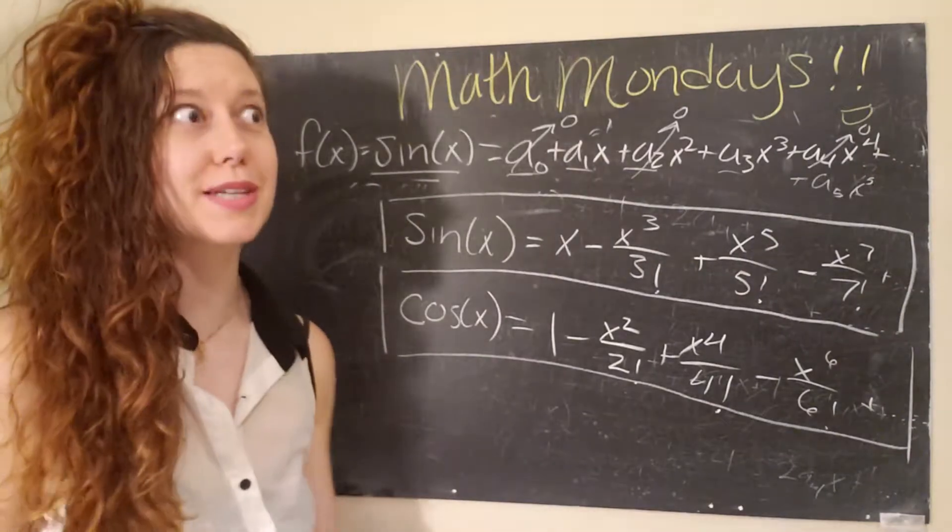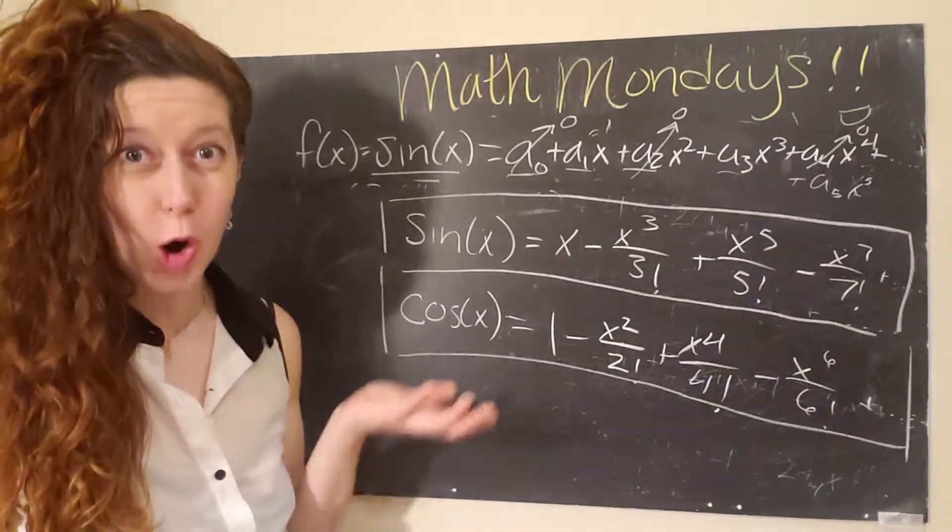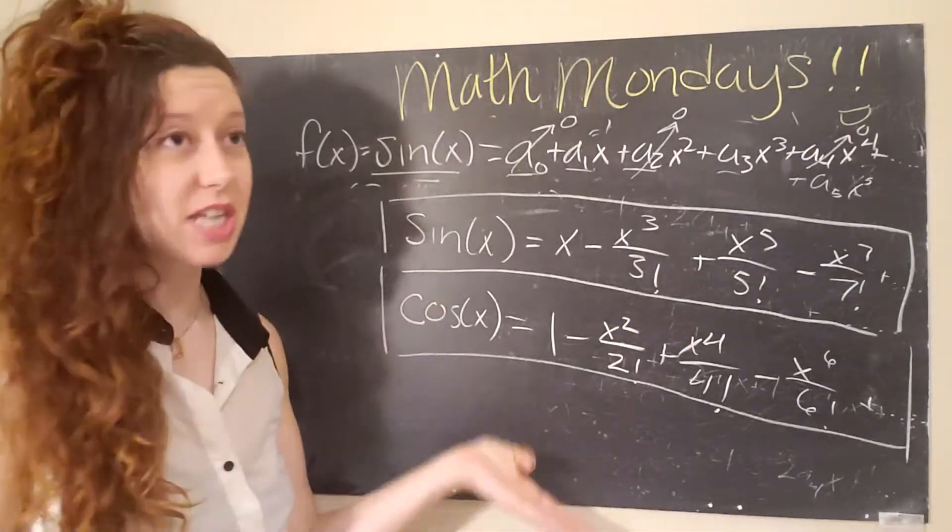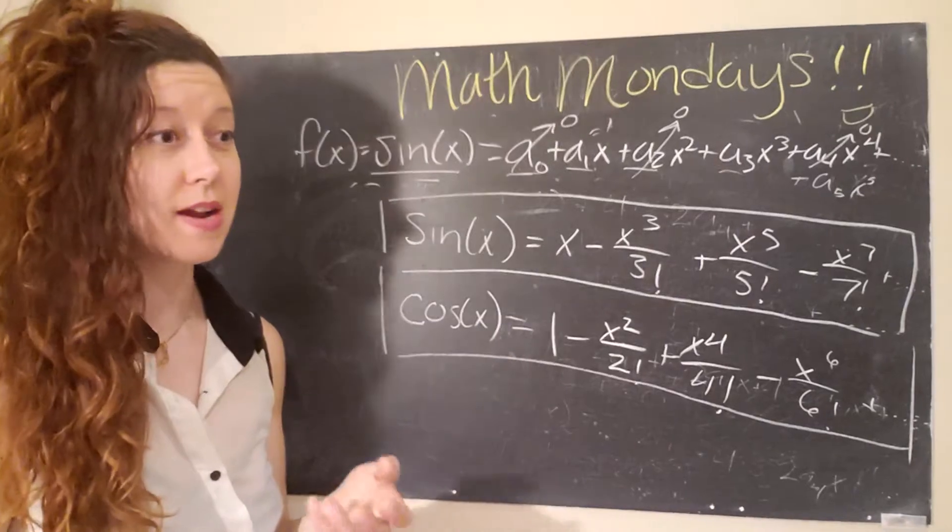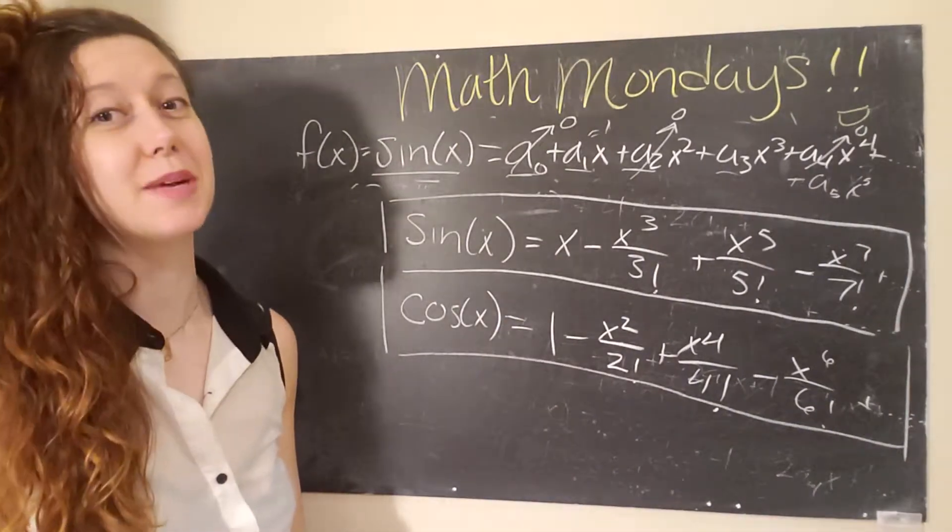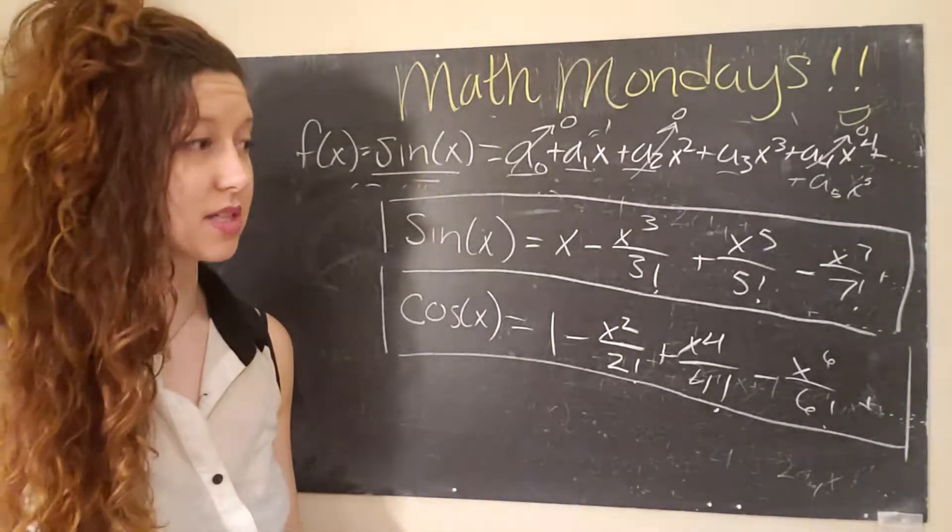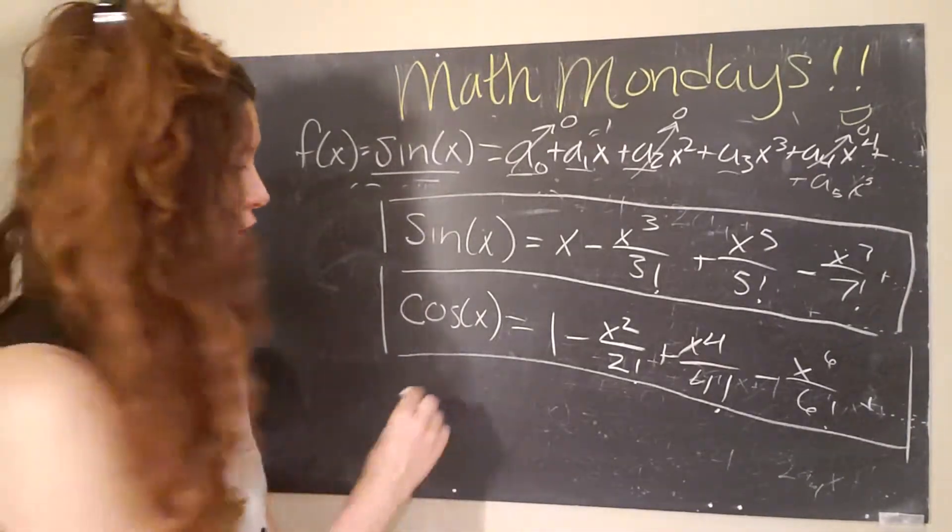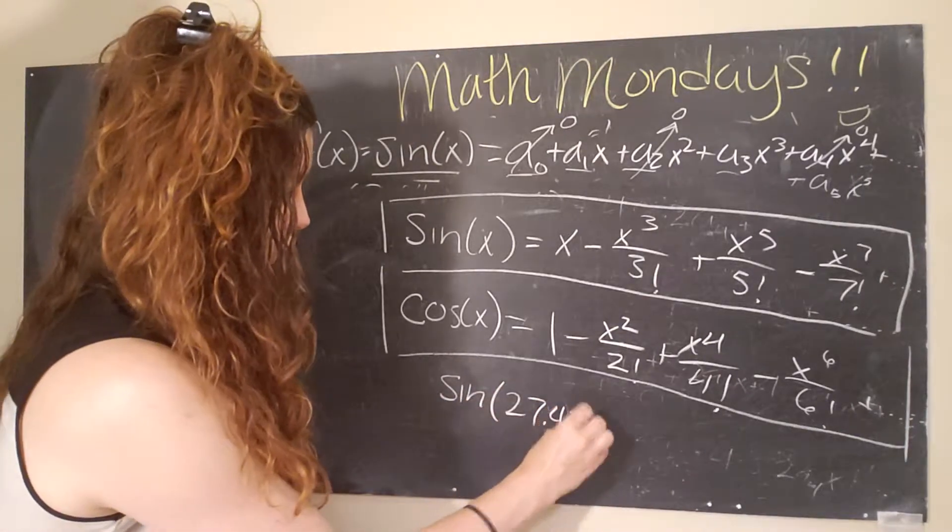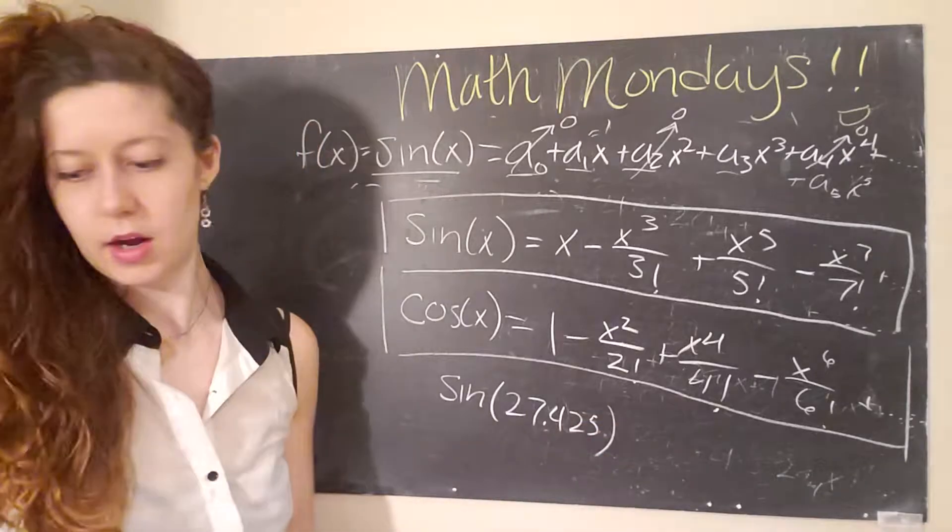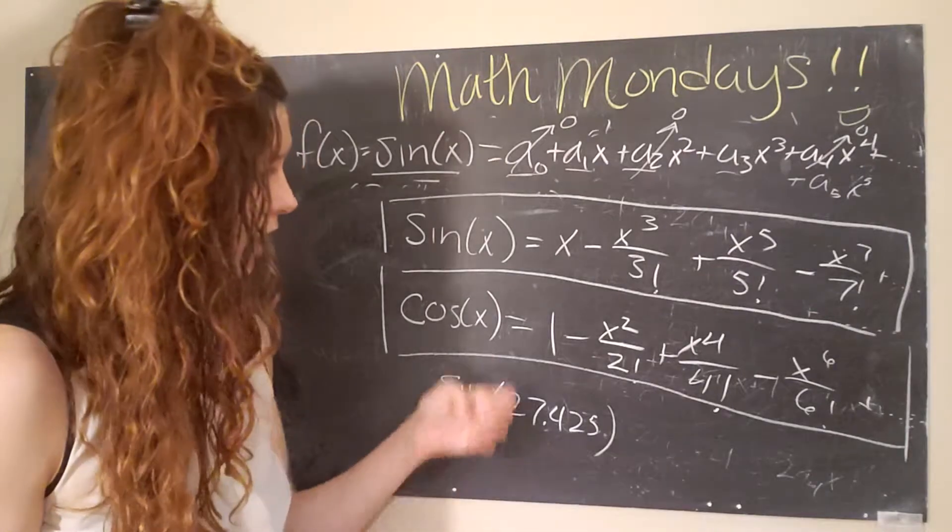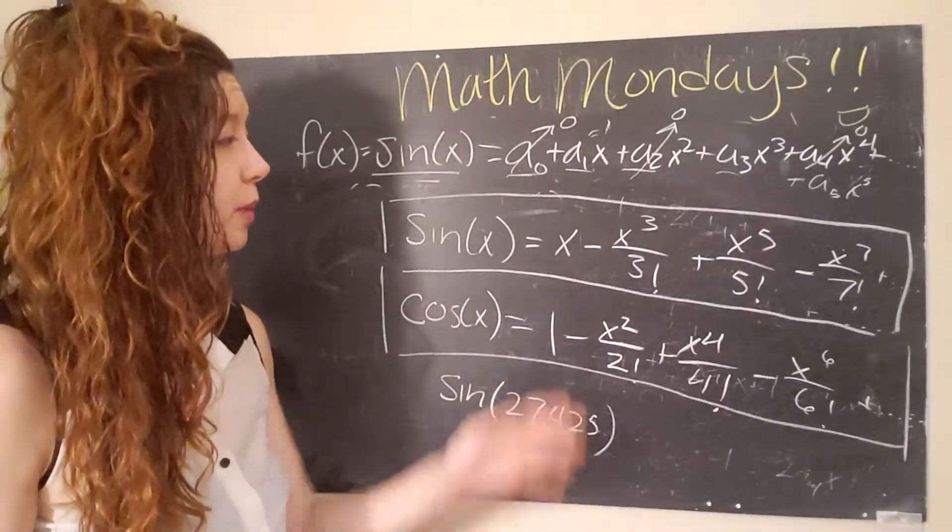And this is actually really useful because calculators are a new thing. So mathematicians back in the day had to have these tables of values for sine and cosine or memorize them. The really serious mathematicians probably did them so many times that they did have them memorized. But let's say someone needed to figure out sine of 27.425. I'm not actually going to do this because no thank you.